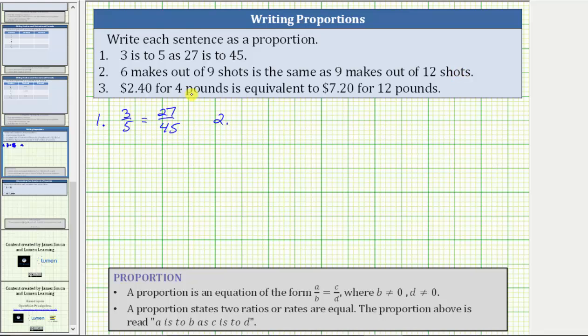Let's compare the makes to shots, which means the proportion is going to be in the form of makes to shots equals makes to shots.